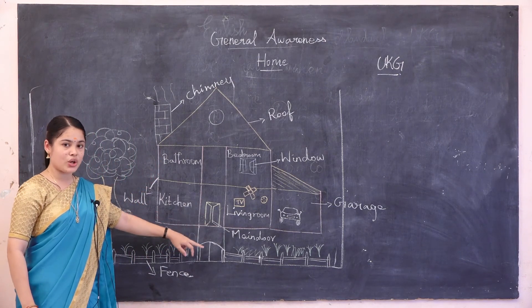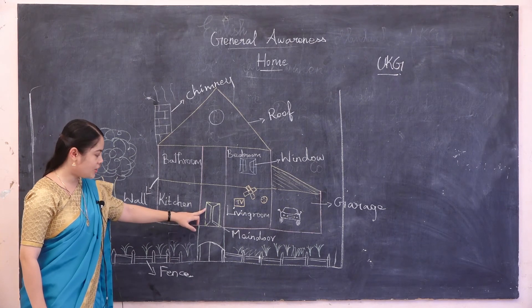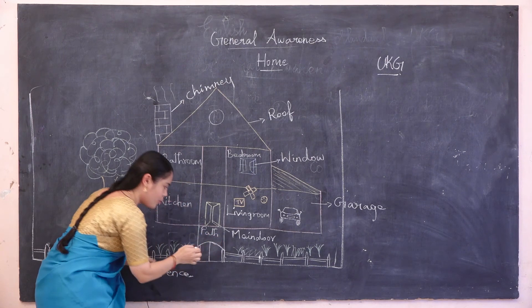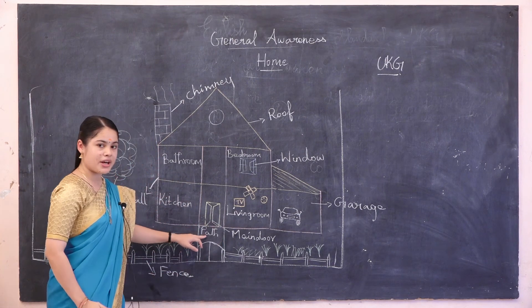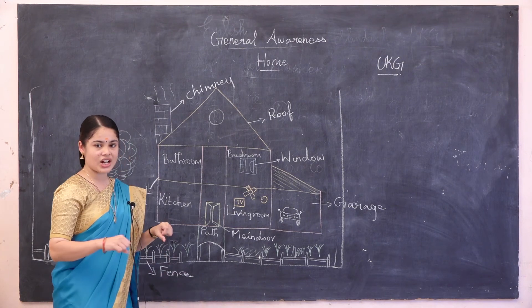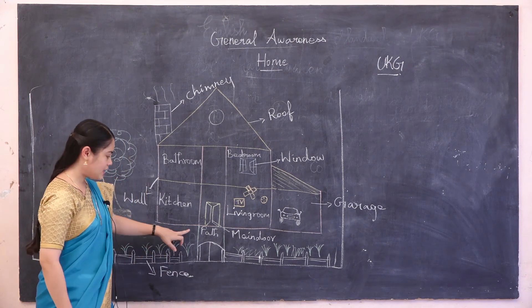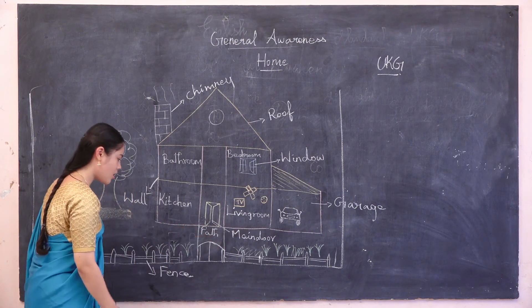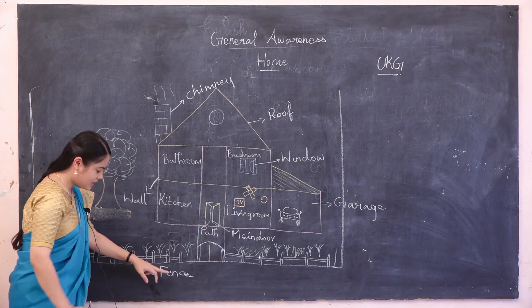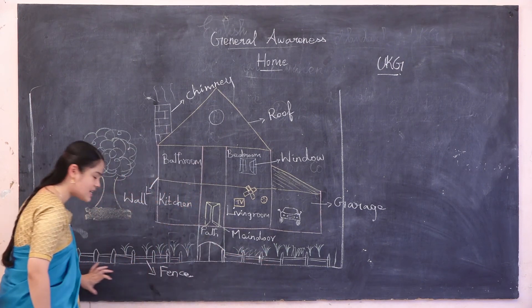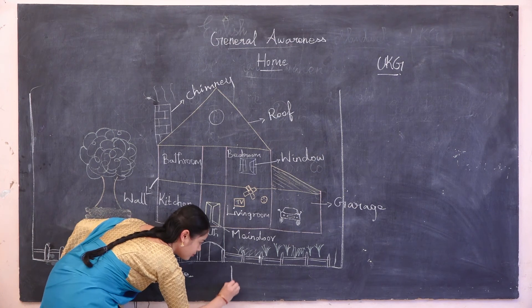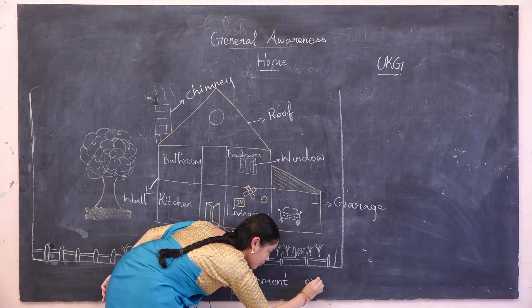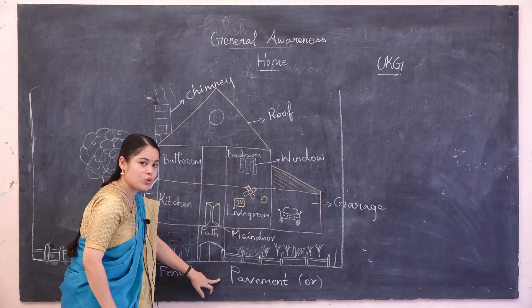What is outside the main door? Yes, this is the path. You can walk and ride a cycle on it. Outside the vents, this area is called the pavement.